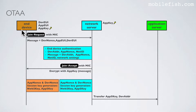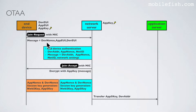The ANT device generates the DevNonce, which is a randomly generated number to prevent rogue devices replaying the join request. The ANT device constructs a message containing the DevNonce, AppEUI, and DevEUI. Over this message, the message integrity code is generated by the AppKey.